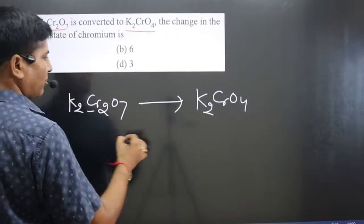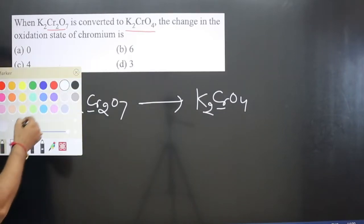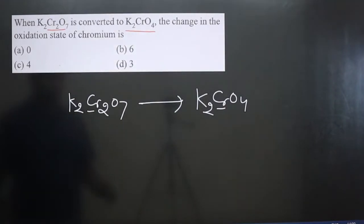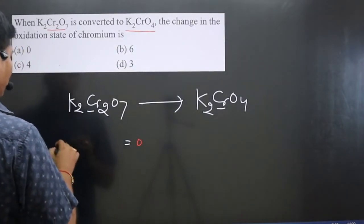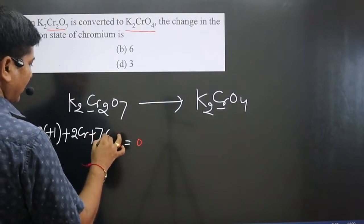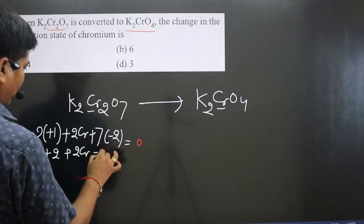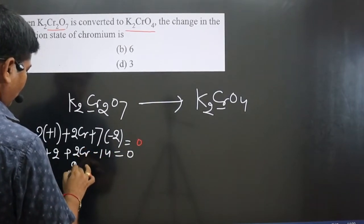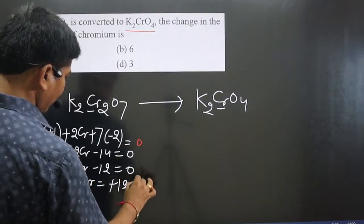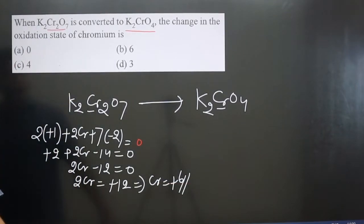We can calculate the oxidation number of chromium, which is the central element. Pay attention carefully — both are neutral compounds. For a neutral compound, the total oxidation number of all elements equals zero. In K₂Cr₂O₇: two potassium at +1, two chromium, and seven oxygen each at −2. So: +2 + 2Cr − 14 = 0, giving 2Cr = +12.